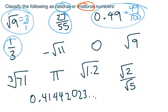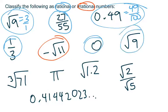1 third is a fraction, that's a rational number. Negative root 11. Negative root 11. There is no fraction that will give us a value equivalent to root 11. So this is an irrational number. 0, that is a rational number. We already did root 9. Root 9 is also a rational number because it equals 3.